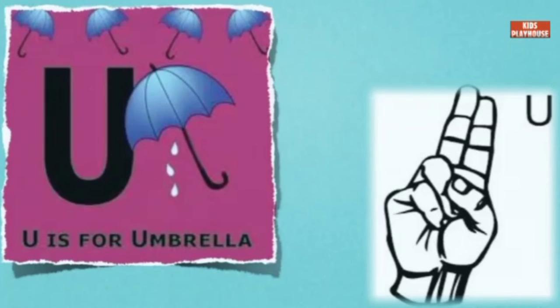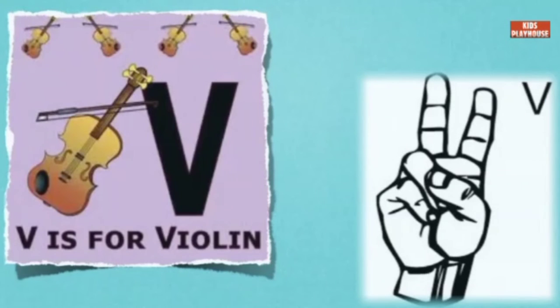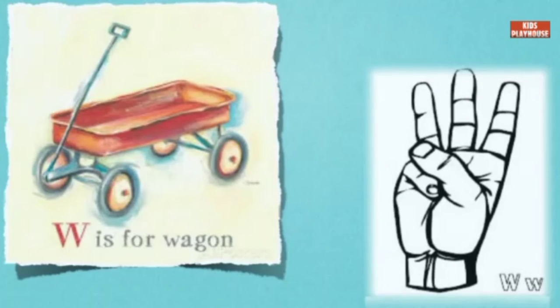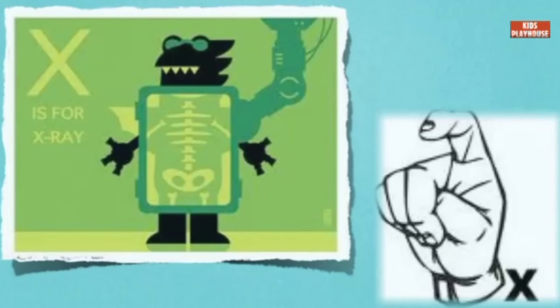U is for Umbrella. V is for Violin. W is for Wagon. X is for X-Ray.